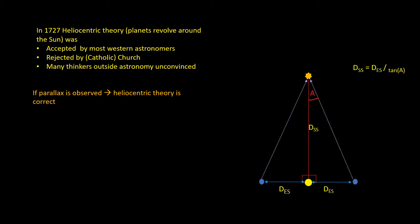And this diagram shows how you do it. Just from simple trigonometry, the distance to the star, which I've given the symbol Dss, is equal to the distance between the Earth and Sun, which was known in Bradley's time, divided by the tangent of the parallax angle, which Bradley hoped to measure.